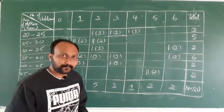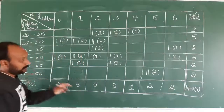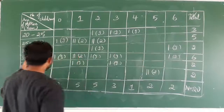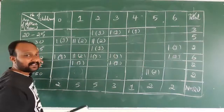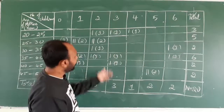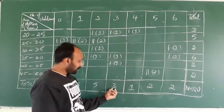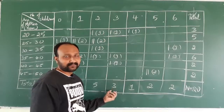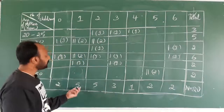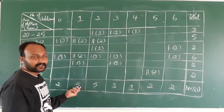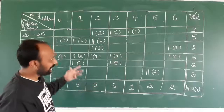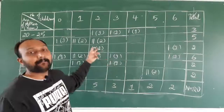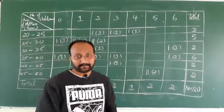Now we can easily analyze the data. For example, there are 6 mothers within the age bracket 30 to 40. Similarly, there are 3 mothers having 3 children, and there are 5 mothers having only 1 child. We can easily analyze this data when it is represented in a bivariate frequency distribution table.